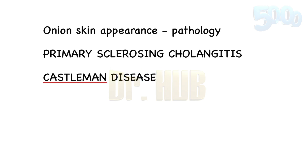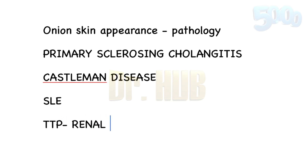Castleman disease includes onion skin appearance of the mantle zone lymphocytes. Then comes systemic lupus erythematosus, which includes onion skin lesions in the spleen. Next is TTP, which shows onion skin appearance of the renal arteries as well as the arterioles.